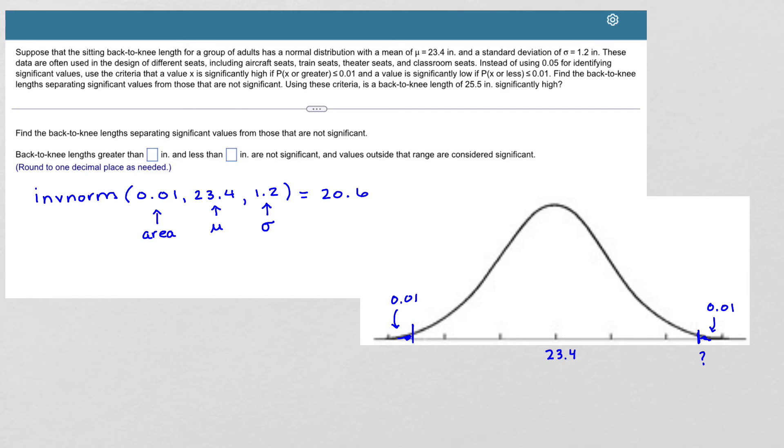So I can mark that here. And then to find our second value, our second cutoff for the significantly high values, I have to do pretty much the same thing. I'm going to do inverse norm.